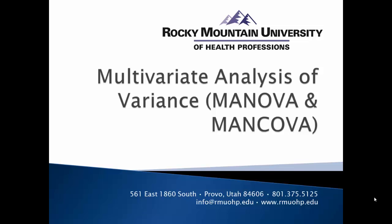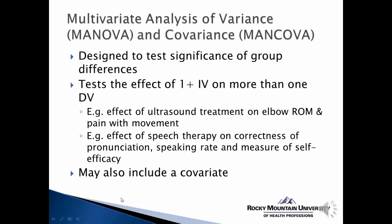In this video, I present the basic theory and application of the multivariate analysis of variance, otherwise known as MANOVA. MANOVA is another variation of basic analysis of variance, designed to test the significance of group differences. It can involve one or more independent variables with multiple groups. The key differentiation from ANOVA is that you are testing the effect of the independent variables on more than one outcome — for example, the effect of ultrasound treatment on elbow range of motion and pain with movement, or the effect of speech therapy on correctness of pronunciation, speaking rate, and self-efficacy.